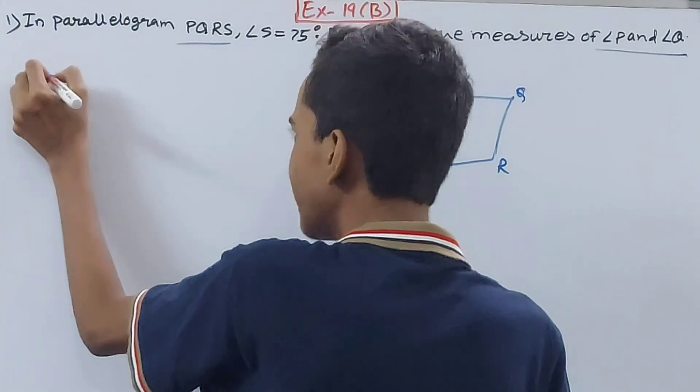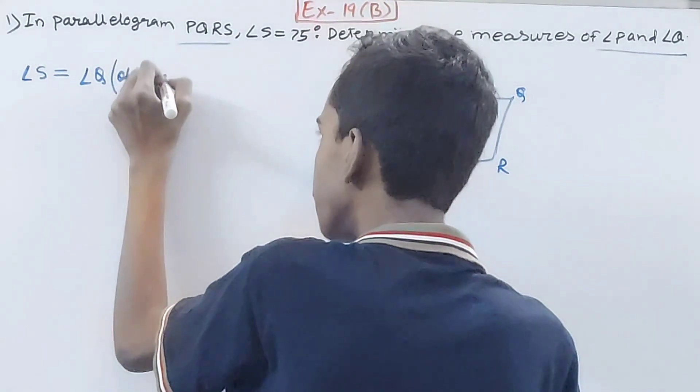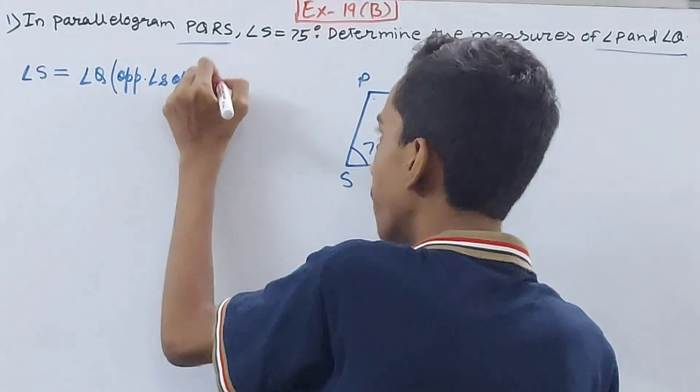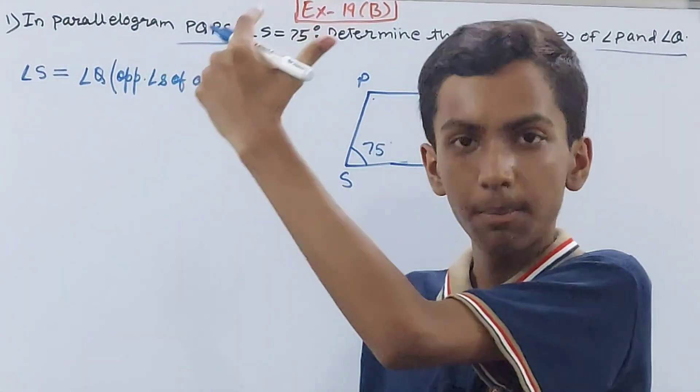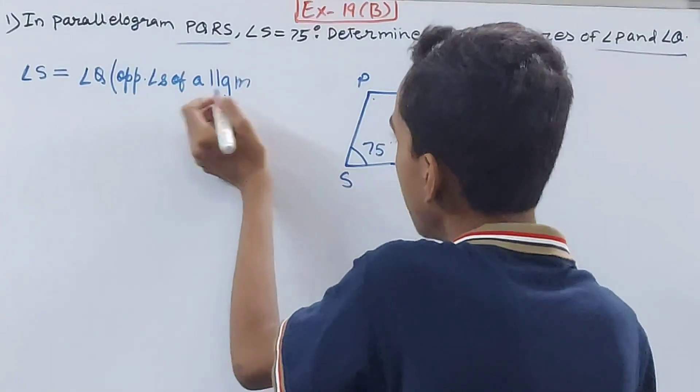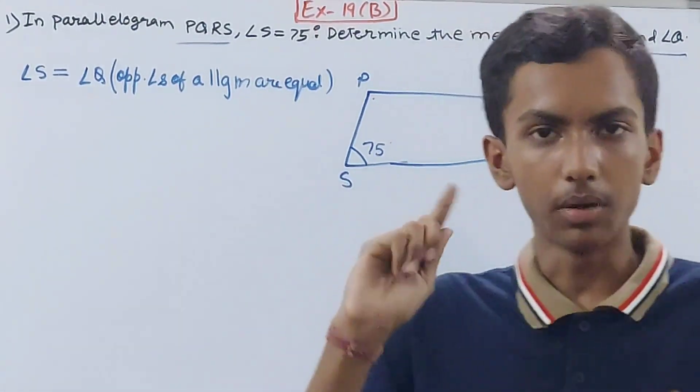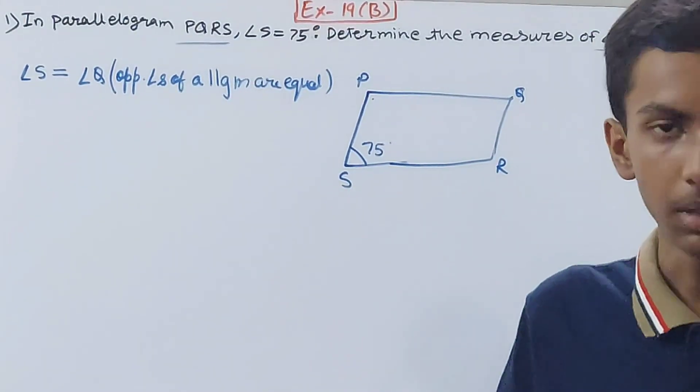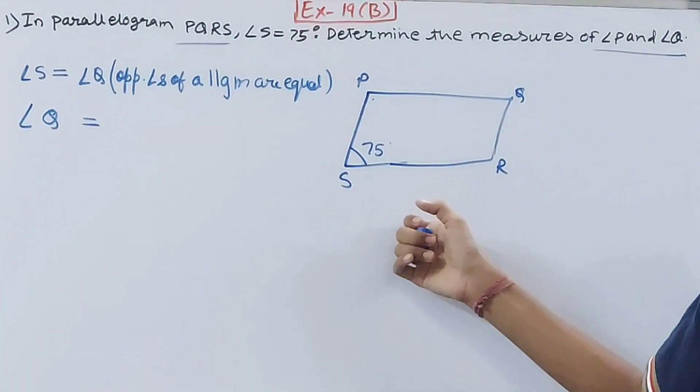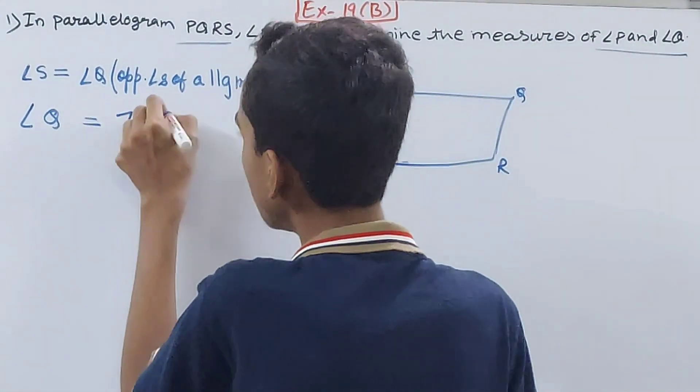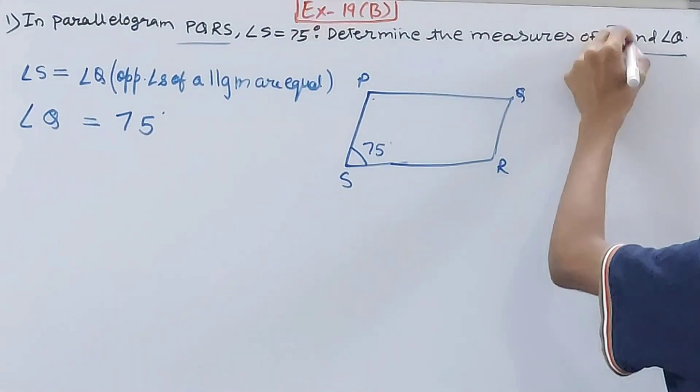So angle Q is opposite to angle S. You can write here: angle S will be equal to angle Q. Opposite angles of a parallelogram are equal. This is the property. That means angle Q will be equal to 75 degrees. So angle Q equals 75 degrees. One thing we've already found out.